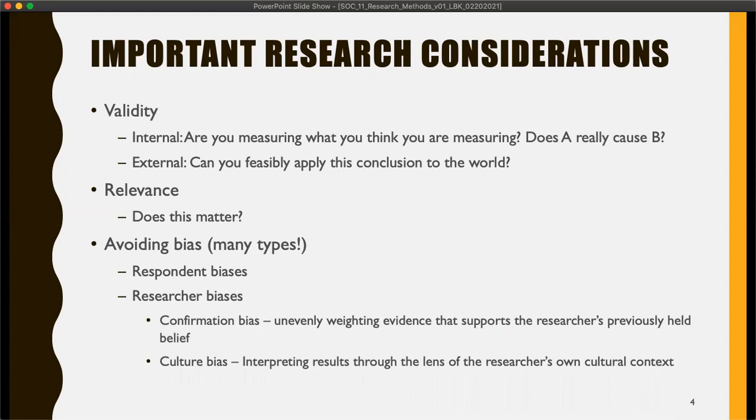So avoiding bias — there are two main types: respondent bias, where the subjects are the source, and researcher bias, where the experimenters are the source. For our conversation today, the most important are confirmation bias and cultural bias. Confirmation bias is about taking into account evidence that supports your previously held beliefs as the researcher and discounting what you're gathering that doesn't support those beliefs. This is one of the most important and most difficult forms of bias to deal with.